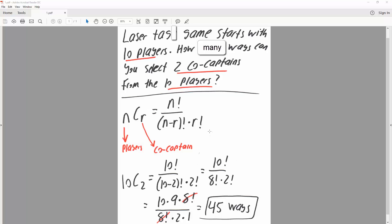And for a combination, this is our formula. And so the number of players that we have is 10, and the number of co-captains that we have is 2. And so we essentially just plug it into this formula.